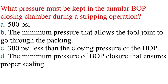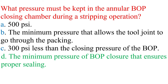Question: What pressure must be kept in the annular BOP closing chamber during a stripping operation? a. 500 psi, b. The minimum pressure that allows the tool joint to go through the packing, c. 300 psi less than the closing pressure of the BOP, d. The minimum pressure of BOP closure that ensures proper sealing. Answer: d. The minimum pressure of BOP closure that ensures proper sealing.